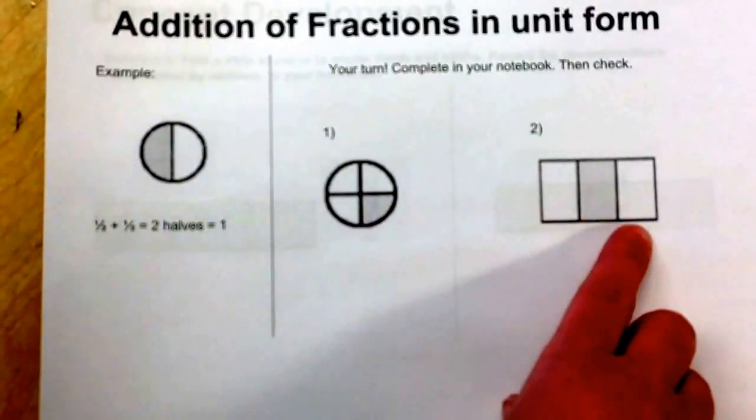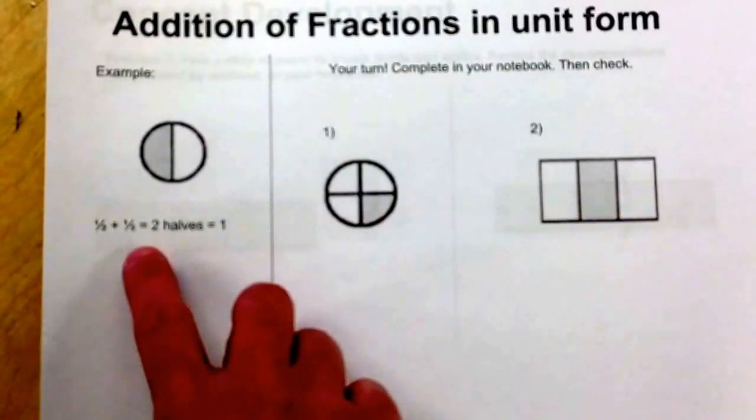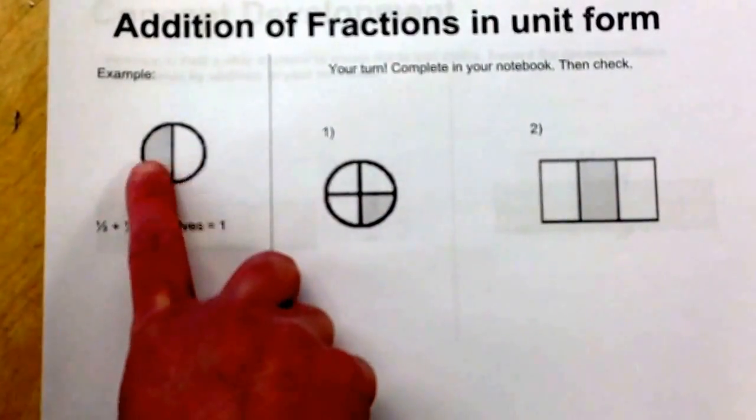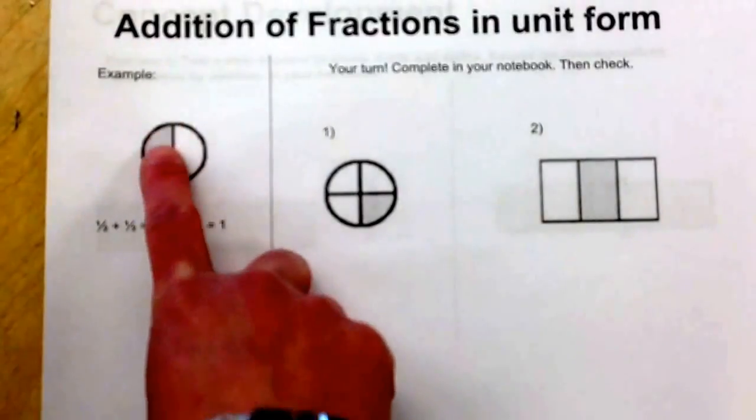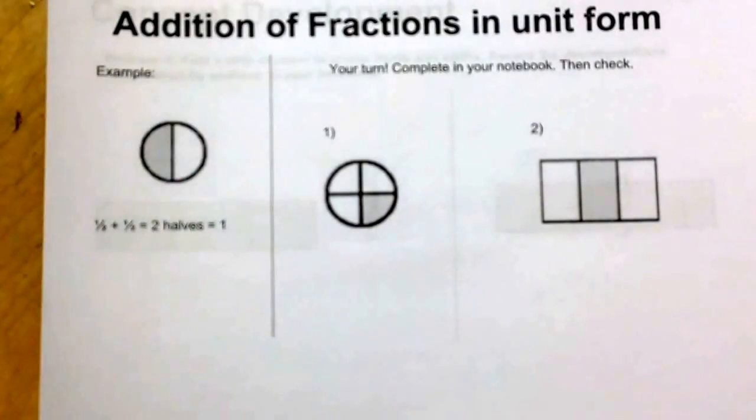And then I'd like you to do the same thing here. We have thirds and we have one part that's shaded. So here we did a half plus a half which gives us two halves or one whole. I'd like you to do the same thing here.